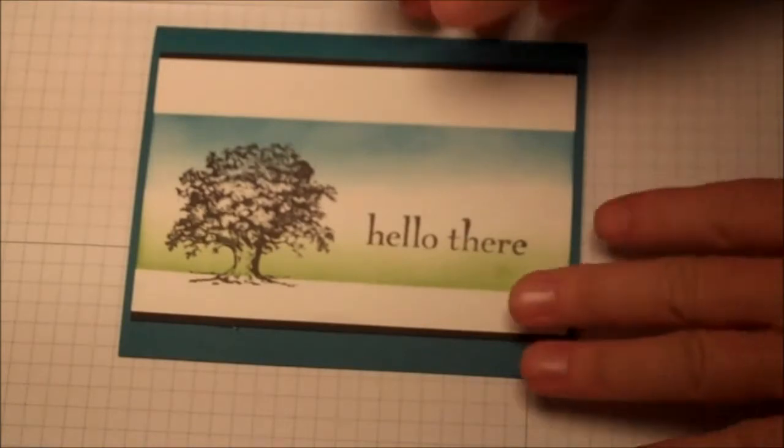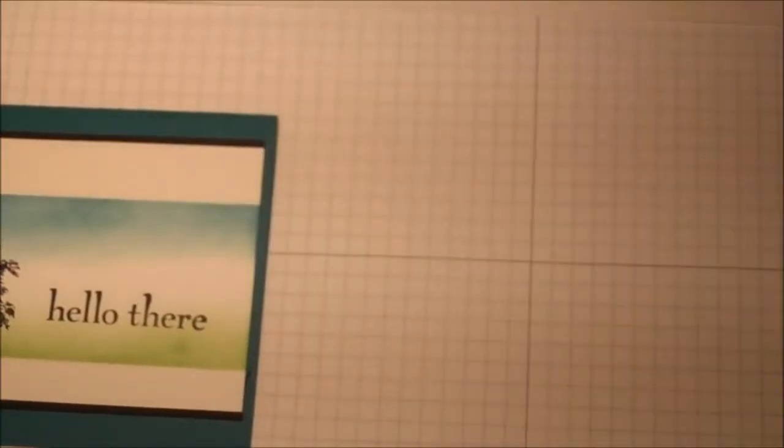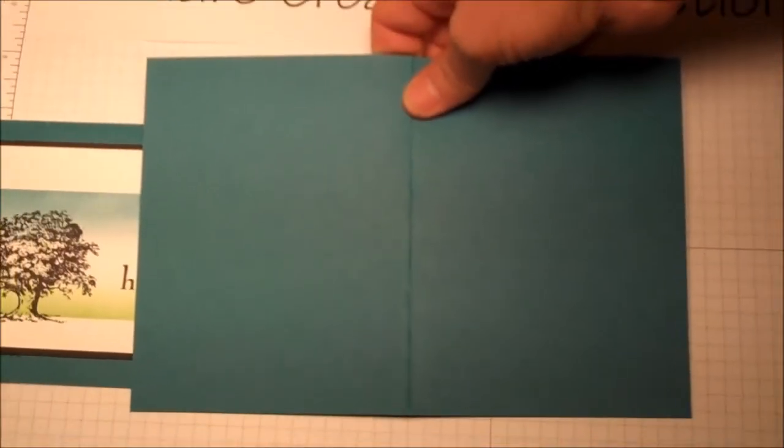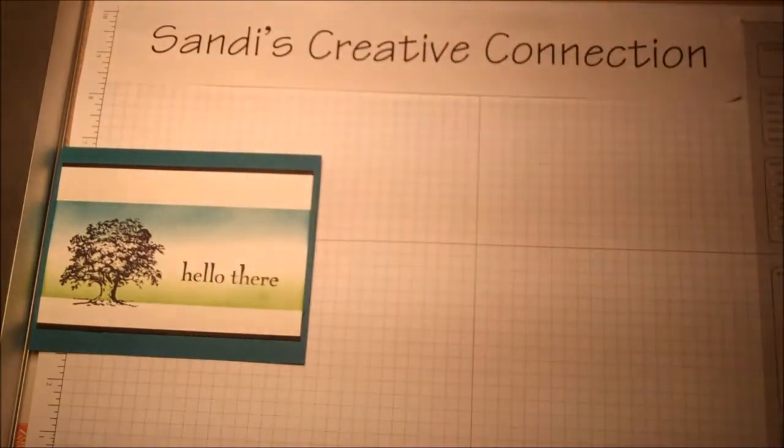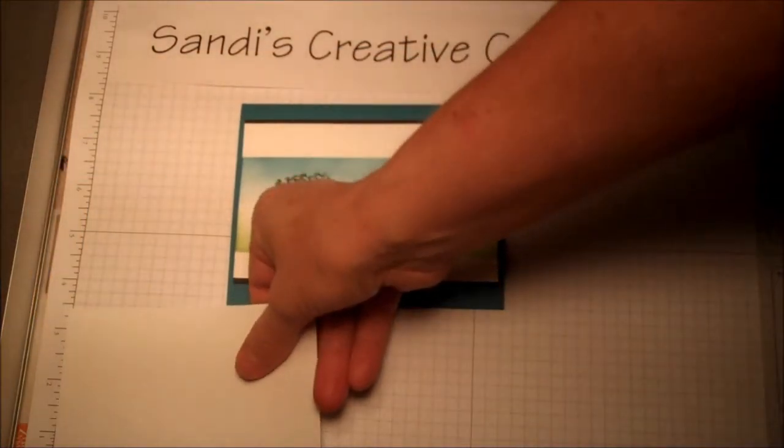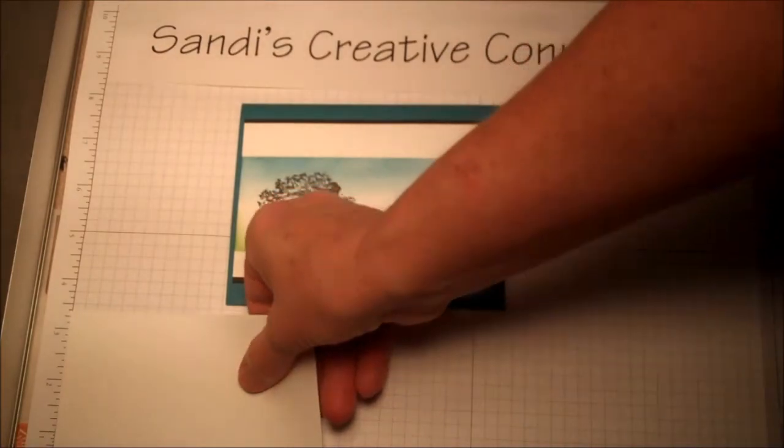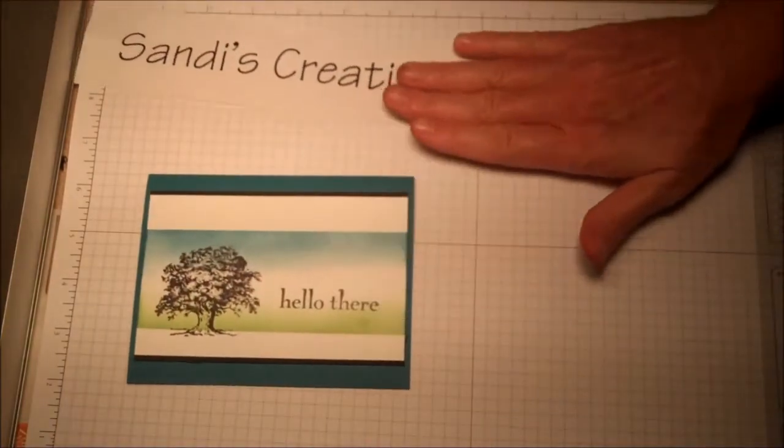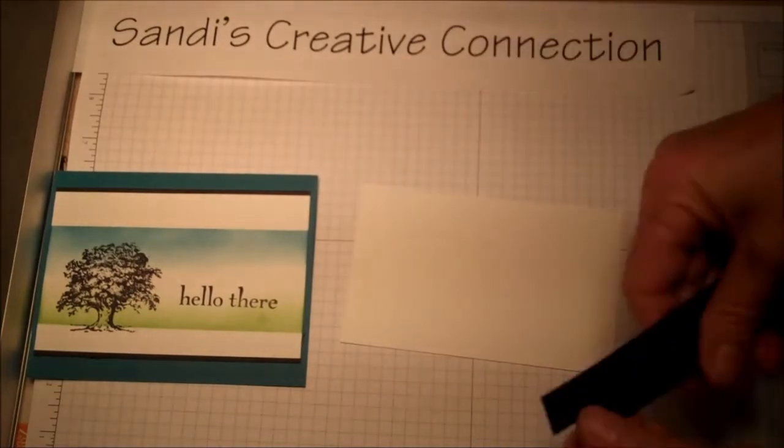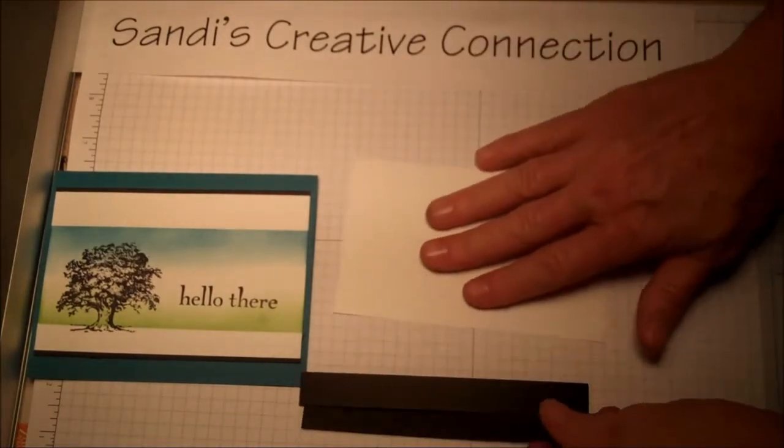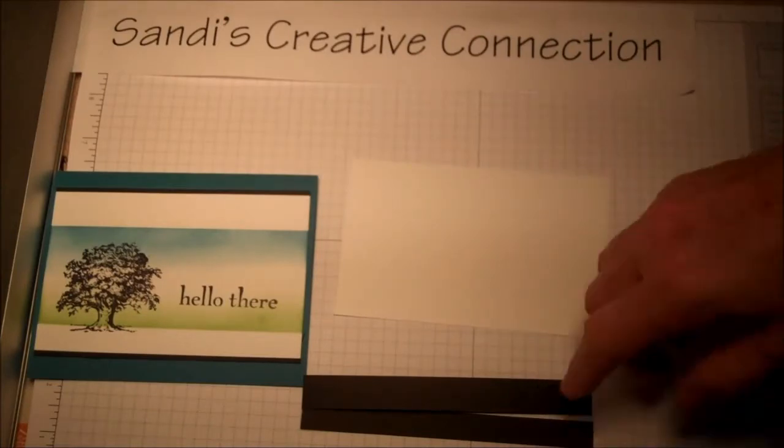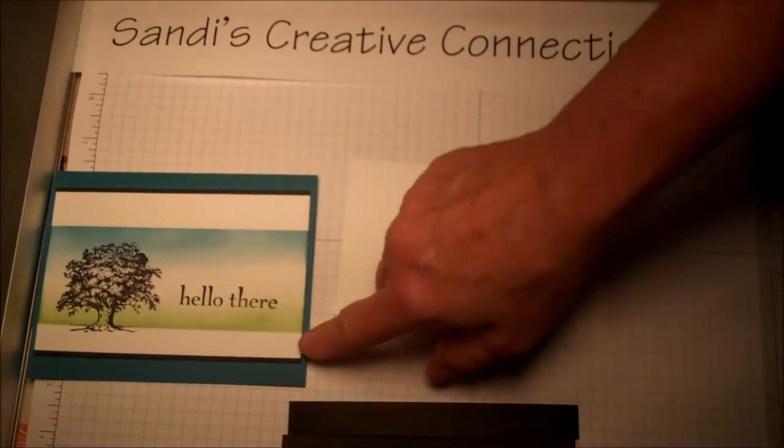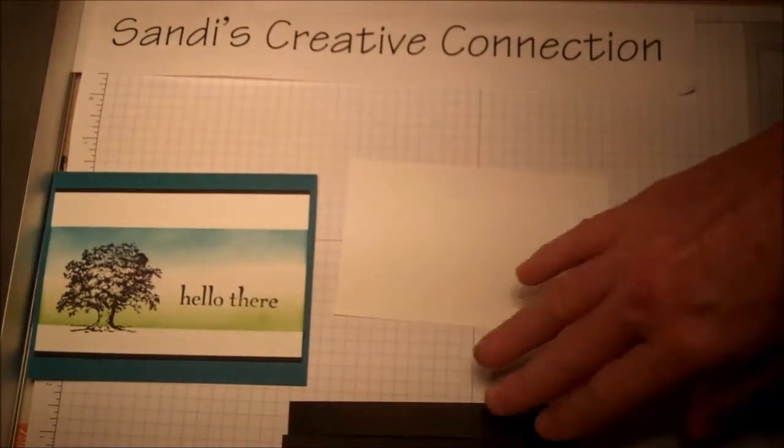So let's get started. You're going to need your card base, this is Island Indigo and it's eight and a half by five and a half. Then you're going to need a sheet of Whisper White that is three and a quarter by five and a quarter. Then you're going to need some strips of Basic Black, they're five and a quarter long and you can really make them any thickness you want. I happen to do a half inch and three quarters. They're going to hide out behind the white, so it can be really any thickness that you want.